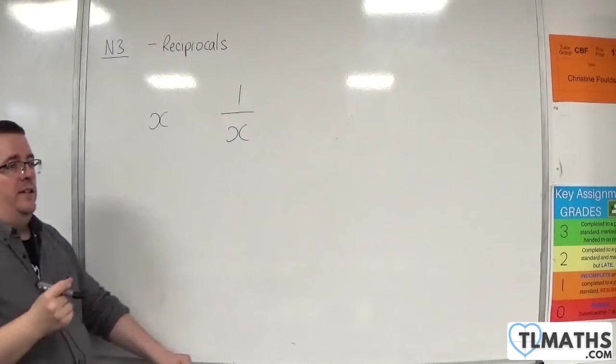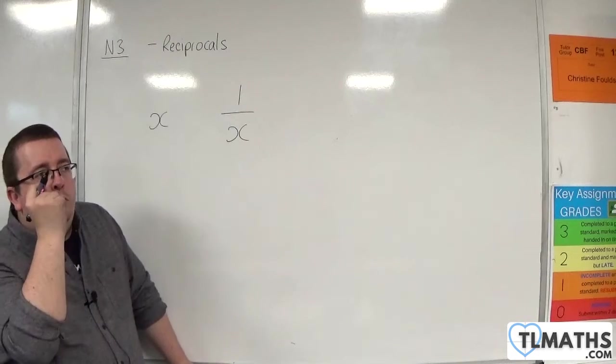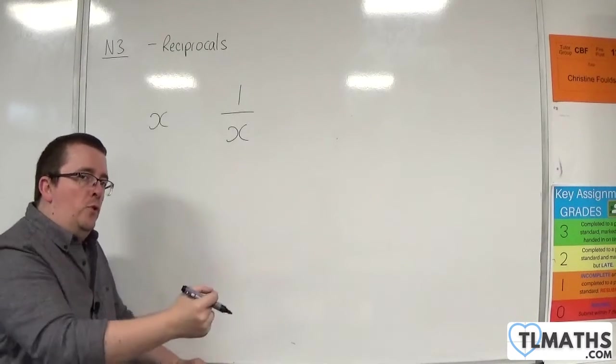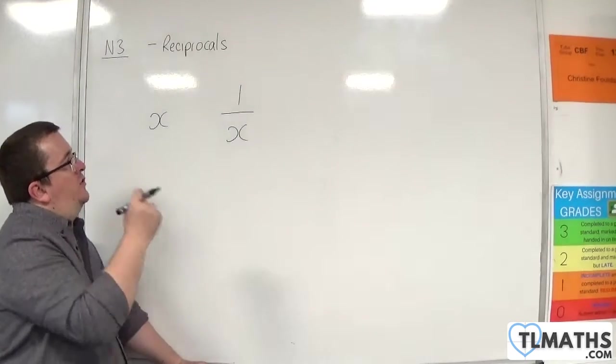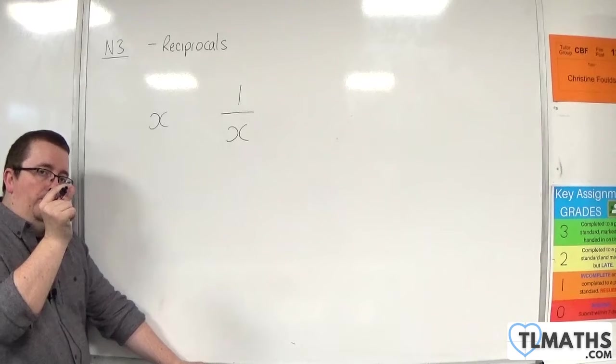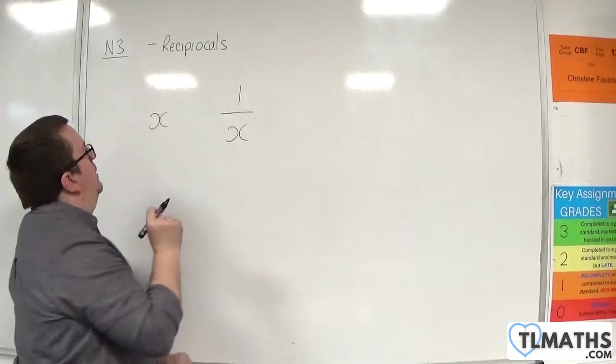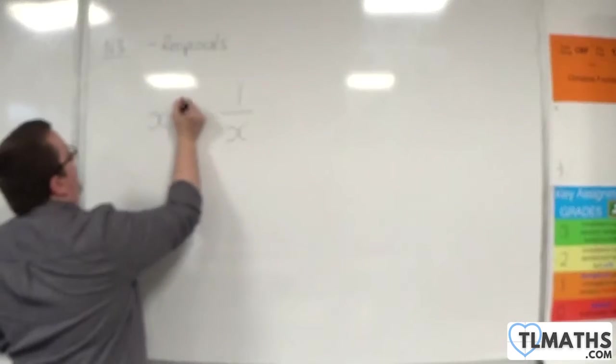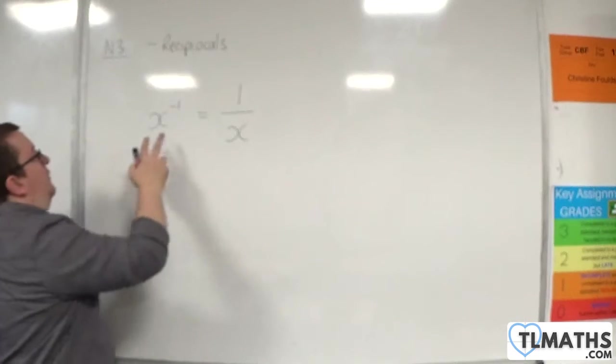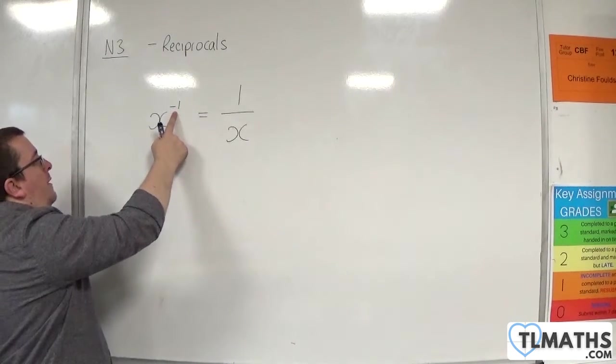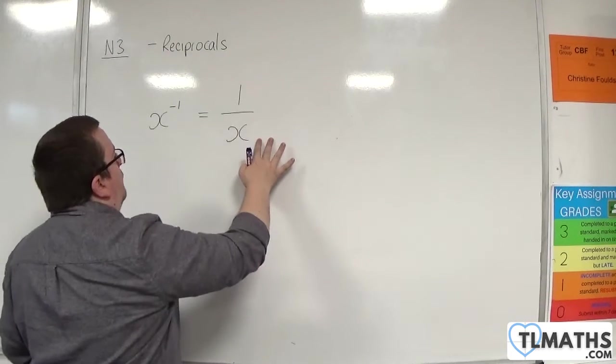The way that we identify that we want to have the reciprocal of a number is with the index, with the exponent. The way we identify that is through minus 1. So x to the minus 1 is taken to mean 1 over x.